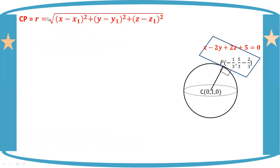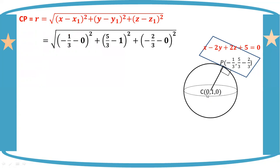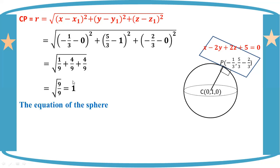The radius will be: the square root of x minus 1 whole square, plus y minus 1 whole square, plus z minus 1 whole square. The center is 0, 1, 0. The point is 1, 1, 1. So the radius: dd is minus 1 by 3. Is one yama zero, one yama five by three minus one, then yama minus two by three. So one yama zero.